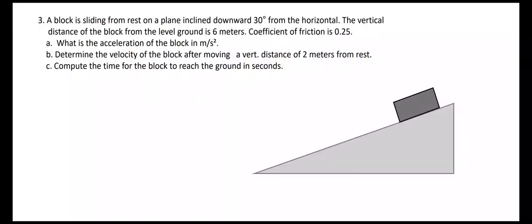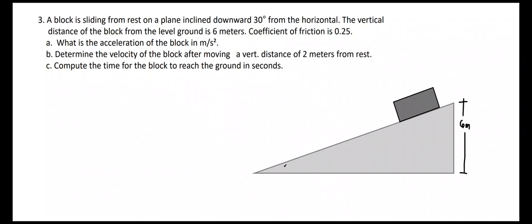In this problem, a block is sliding from rest on a plane inclined downward 30 degrees from the horizontal. The vertical distance of the block from the level ground is 6 meters at an angle of 30 degrees. Given the coefficient of friction equal to 0.25, we are tasked to compute: the acceleration of the block in meters per second squared, the velocity of the block after moving a vertical distance of 2 meters from rest, and the time for the block to reach the ground in seconds.